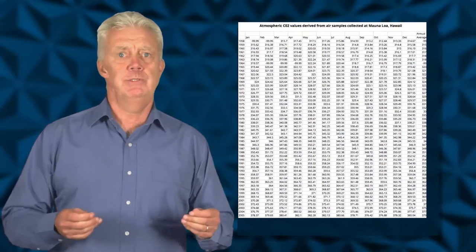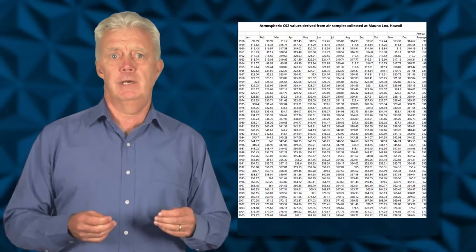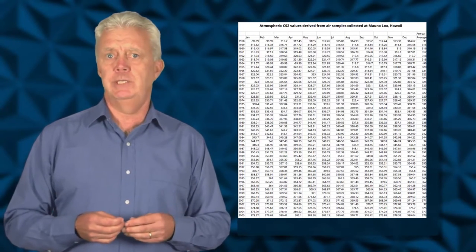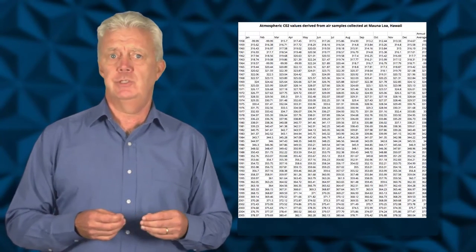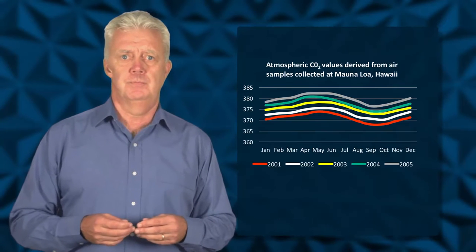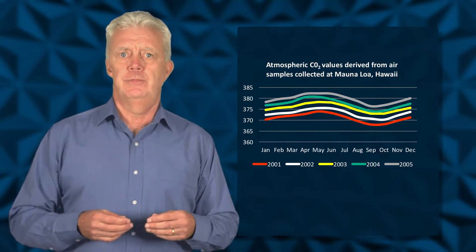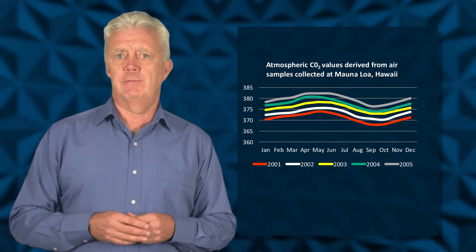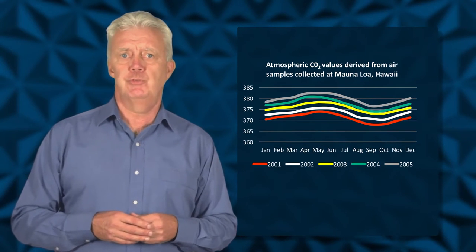When we're presented with a huge list of numbers, it's difficult to make sense of them. Even when data is organized in a table, it is often difficult to see trends. This is when a graph can be very useful.